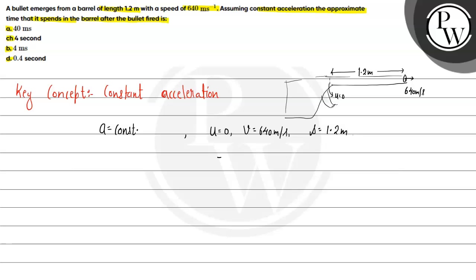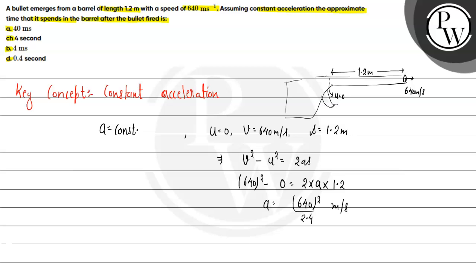The acceleration is constant. First, we will find out the acceleration using the equation v squared minus u squared equals 2as. Final velocity is 640, initial velocity is 0, so 640 squared equals 2 times acceleration times 1.2. Therefore acceleration equals 640 squared divided by 2.4 meters per second squared.